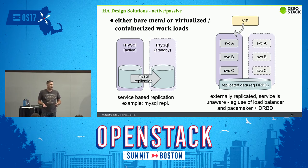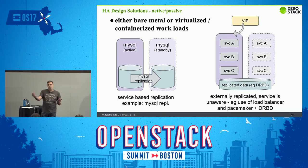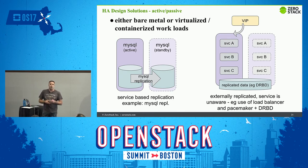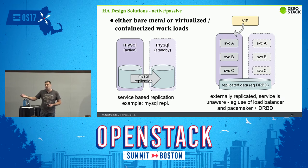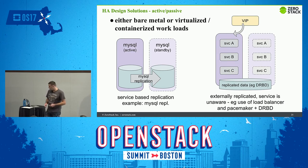For services that can't replicate their own state, you use external mechanisms. DRBD — Distributed Replicated Block Device — allows synchronous and asynchronous byte-by-byte replication of data underneath a service. On top of that, orchestration tools like Corosync, Pacemaker, or Keepalived enable you to STONITH — shoot the other node in the head — to perform a takeover. You kill the master when it's not performing as it should, and either bring up services on the passive node or switch over to services already running in standby capacity.